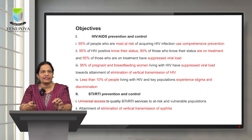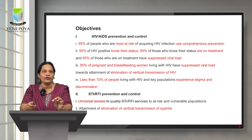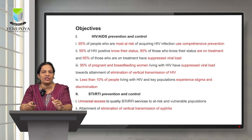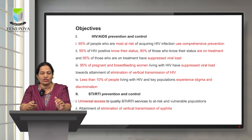The objectives focus on two major aspects: HIV AIDS prevention and control, and STI RTI prevention and control. For HIV AIDS, the objectives are: 95% of people most at risk use comprehensive prevention; 95% of HIV positive individuals know their status; 95% who know their status are on treatment; 95% of those on treatment have suppressed viral load; 95% of pregnant and breastfeeding women living with HIV have suppressed viral load towards elimination of vertical transmission of HIV; and less than 10% of people living with HIV and key populations experience stigma and discrimination. For STI RTI, the objectives state universal access to quality STI RTI services for at risk and vulnerable populations and attainment of elimination of vertical transmission of syphilis.